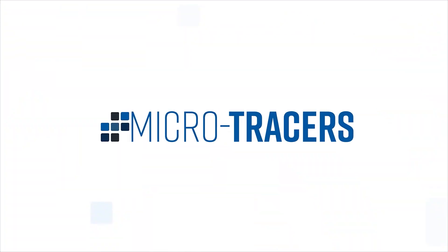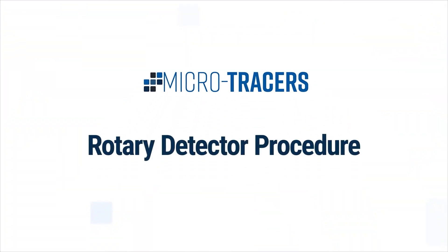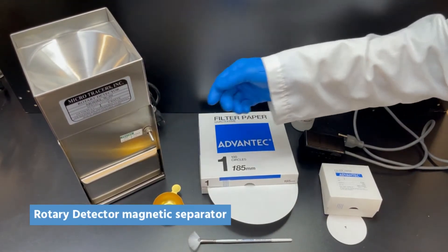The Microtracer Rotary Detector Test Kit comes in a metal carrying case. Inside the case are the following items: Rotary Detector Magnetic Separator,